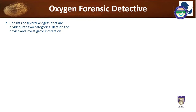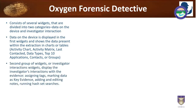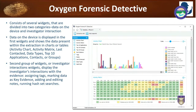Oxygen Forensic Detective consists of widgets divided into two categories: data on the device and investigator interaction. Data on the device is displayed in the first widget showing data present within the extraction in charts or tables — chart activity, chart metrics, last contacted information, data types, top 10 applications, contacts, or groups. The second investigator widget displays the investigator's interactions with that evidence: assigning tags, marking data as key evidence with red, blue, green colors, adding and editing notes, and running hash set files. It presents everything in a very simple, colorful chart manner that anyone can understand.